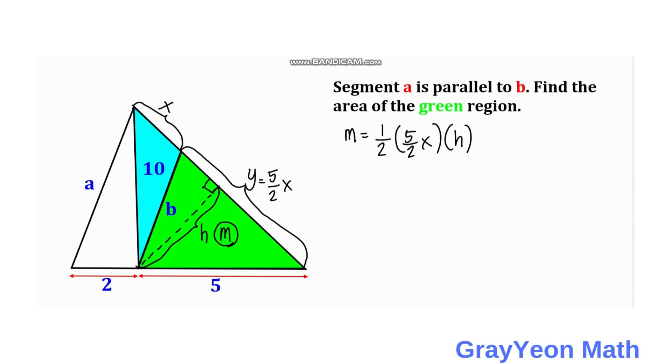For the blue, we have 10 equals 1 half times the base which is x, and the height which is h. We label these as equation 1 and equation 2.